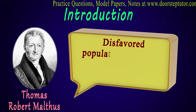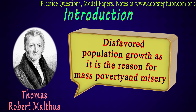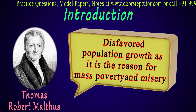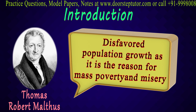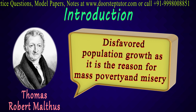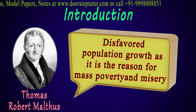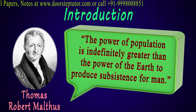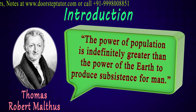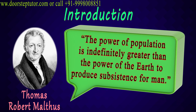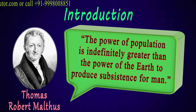Malthus disfavored population growth. He said that it is not good for the population to grow at an increasing speed because the resources keep on diminishing, and it leads to poverty and misery. Nobody has control over the resources. A majority of people suffer because they cannot get access to resources. He said that the power of population is indefinitely greater than the power of the earth to produce subsistence for man. The power of population is so immense that the power of the earth seems low against it.